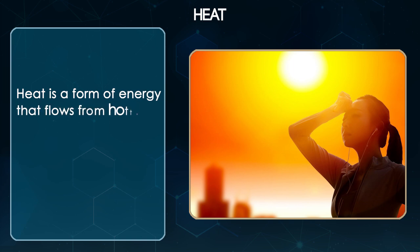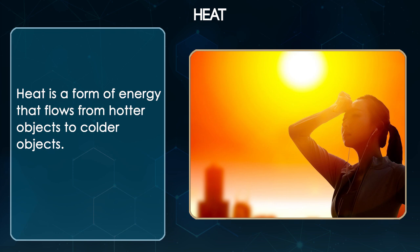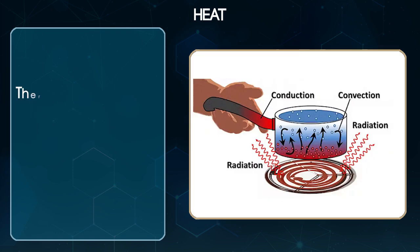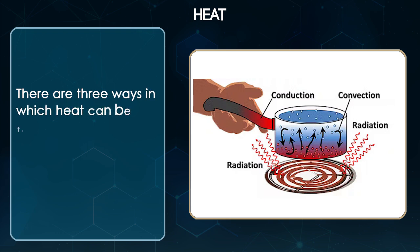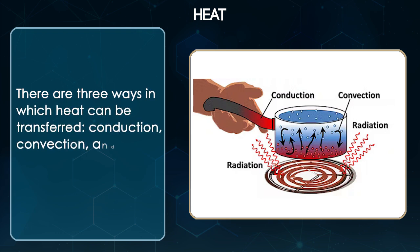Heat is a form of energy that flows from hotter objects to colder objects. There are three ways in which heat can be transferred: conduction, convection and radiation.